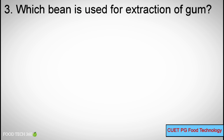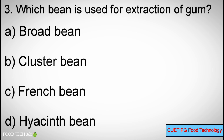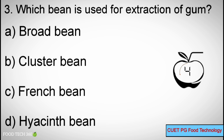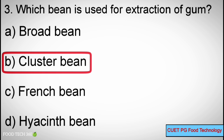Q3: Which bean is used for extraction of gum? A. Broad bean, B. Cluster bean, C. French bean, D. Hyacinth bean. Correct answer: B. Cluster bean.